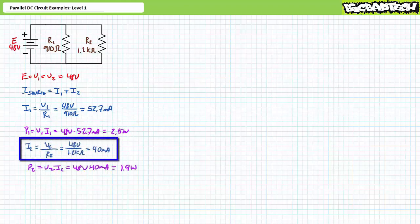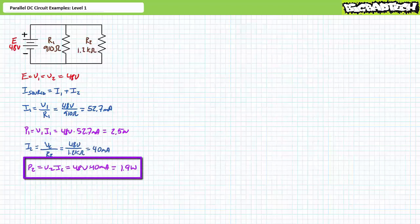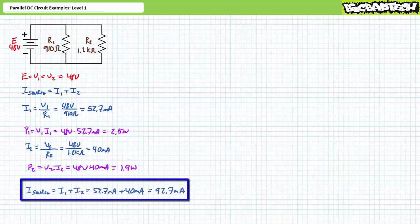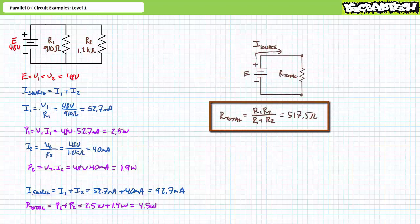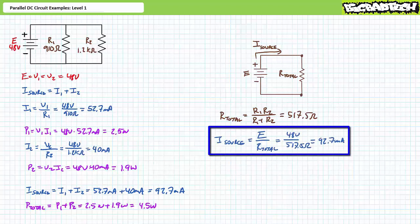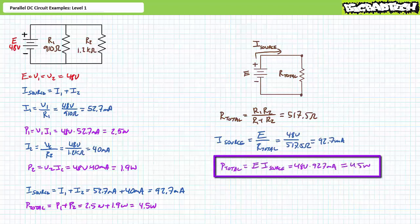Similarly, I2 equals V2 over R2; substituting yields 40 milliamps. P2 equals V2 times I2; substituting yields 1.9 watts. Source current equals I1 plus I2, yielding 92.7 milliamps. Total power equals P1 plus P2, yielding 4.5 watts. As a check, the parallel combination of 910 and 1.2 kilohms gives a total resistance of 517.5 ohms, confirming a source current of 92.7 milliamps and total power of 4.5 watts.